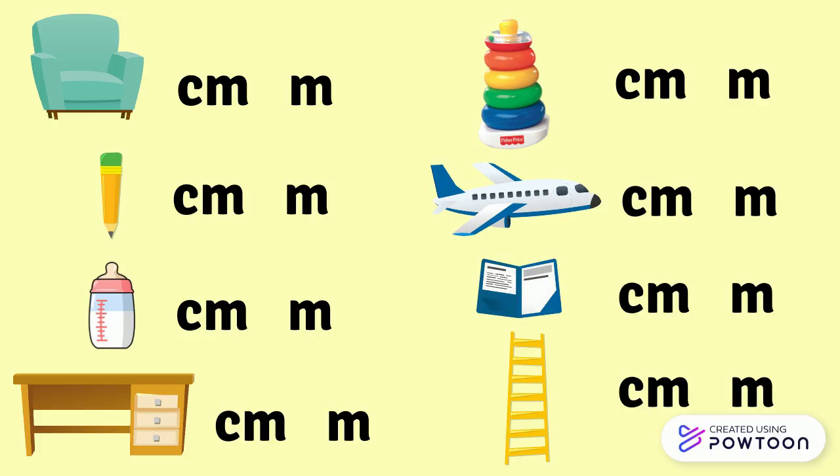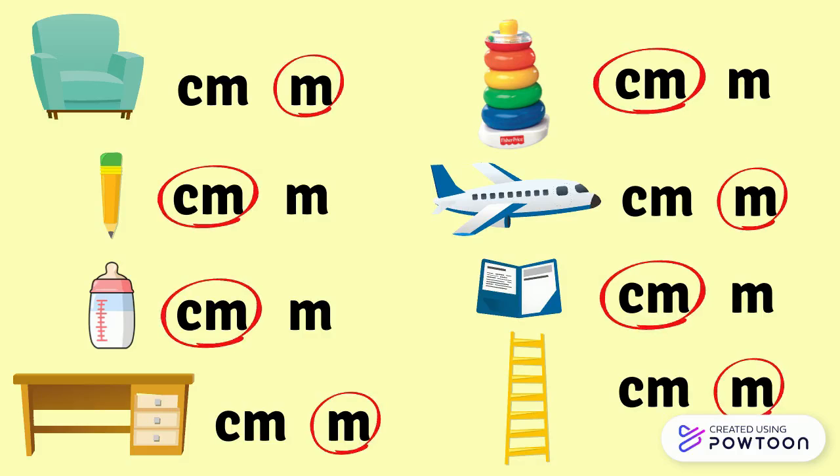I remind you that CM is the symbol for the centimeter and M is the symbol for the meter. Pause the video to take time to think about it. Now let's see if your answers are correct.